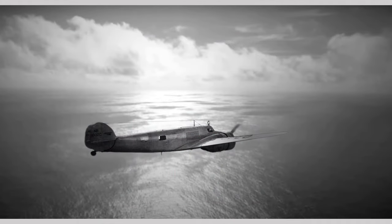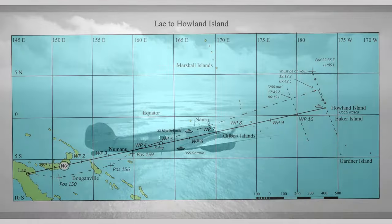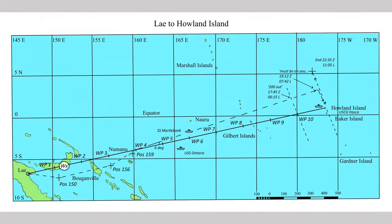Once they descended below the clouds, the wind could be measured using the drift sight. If Noonan recalculated the wind after plotting the sun line and with drift to the left, he may have had an idea that they might be north of track. He probably chose to go south first. With the summer sun over the Tropic of Cancer at 23 degrees north, when they turned south they were looking down-sun and avoiding the glare.